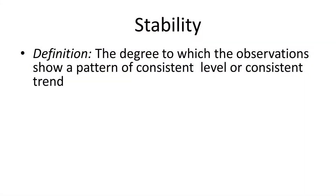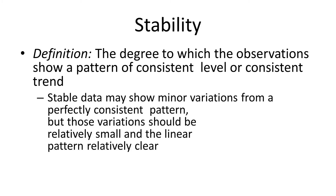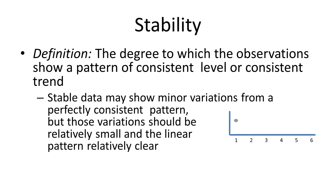Stability refers to the degree to which the observations show a pattern of consistent level or consistent trend. The data can be considered stable even if it shows minor variations from a perfectly consistent pattern — we would say it's stable if those variations are relatively small and you can still draw a nice straight line through them. So this isn't perfect, but it's fairly stable.